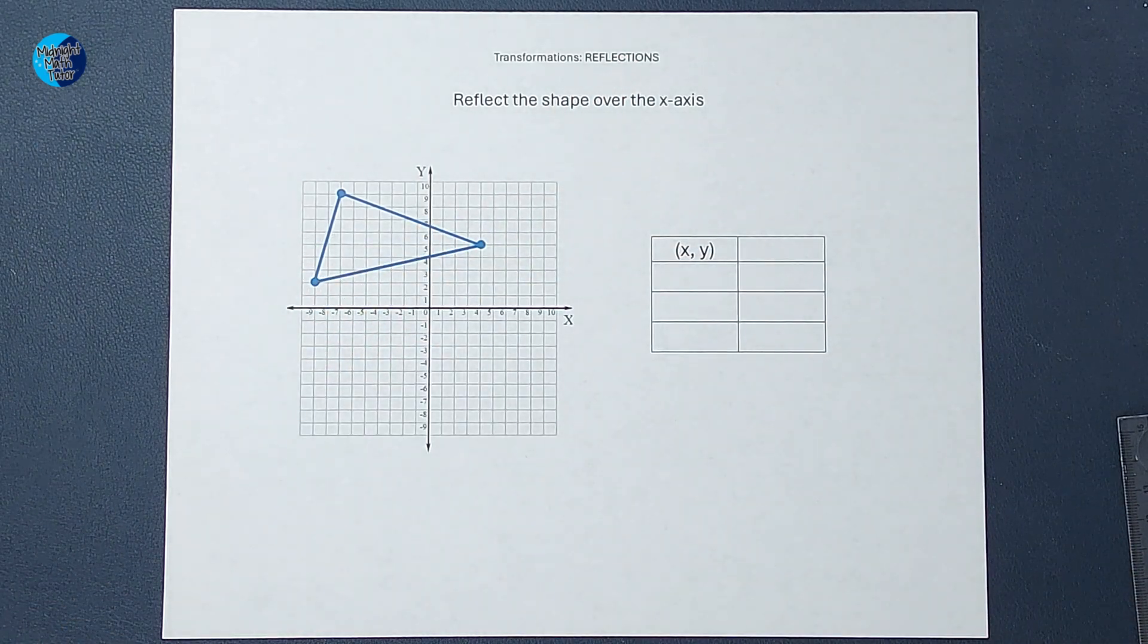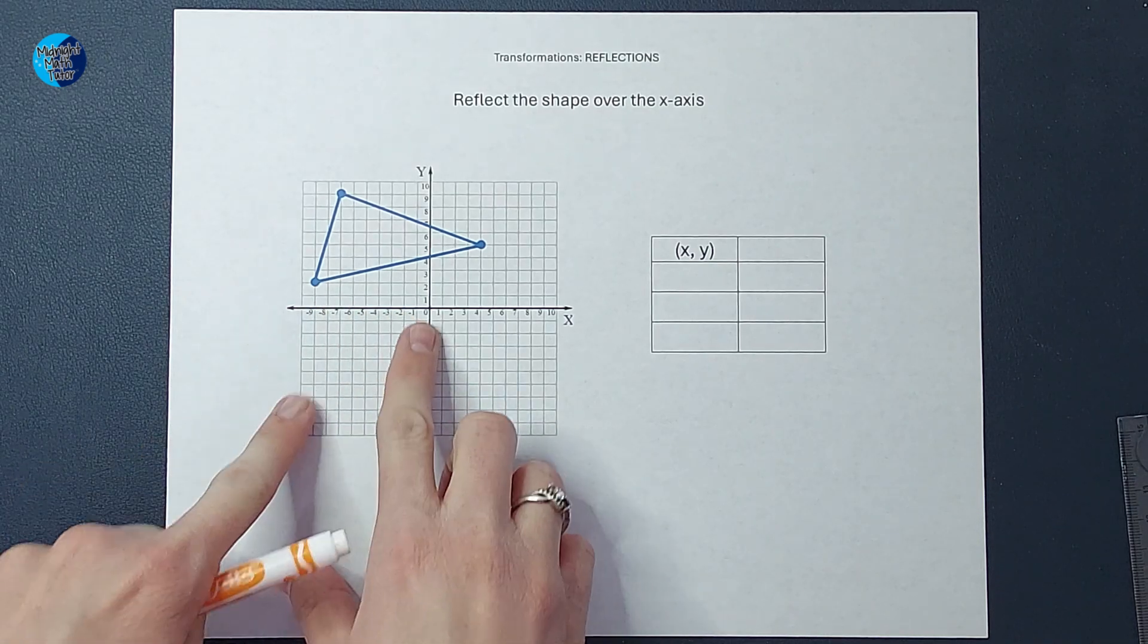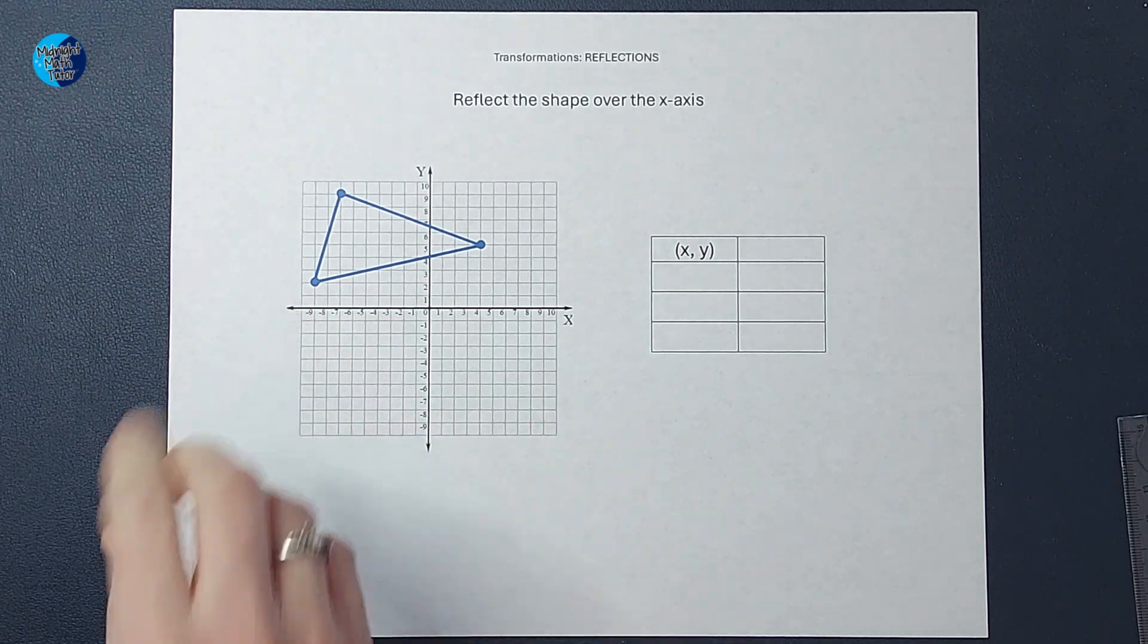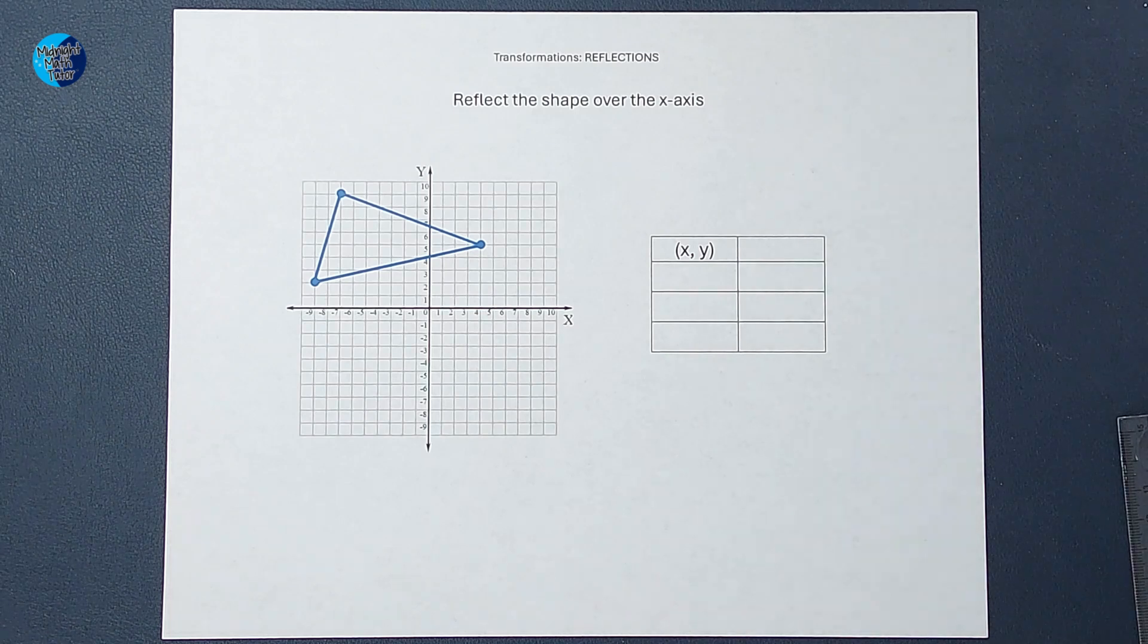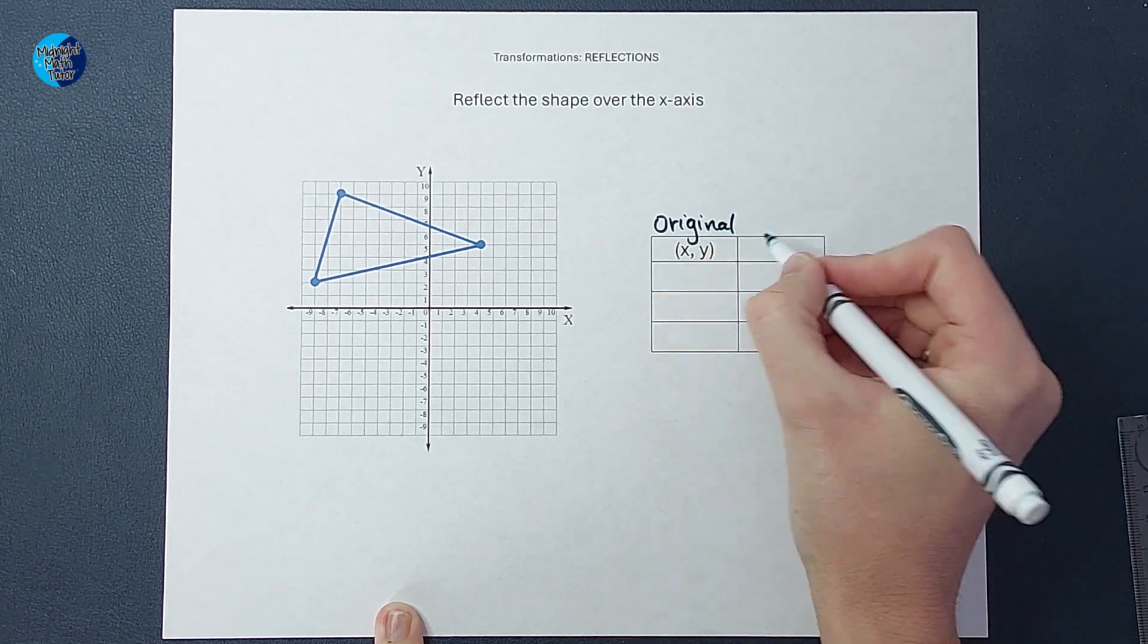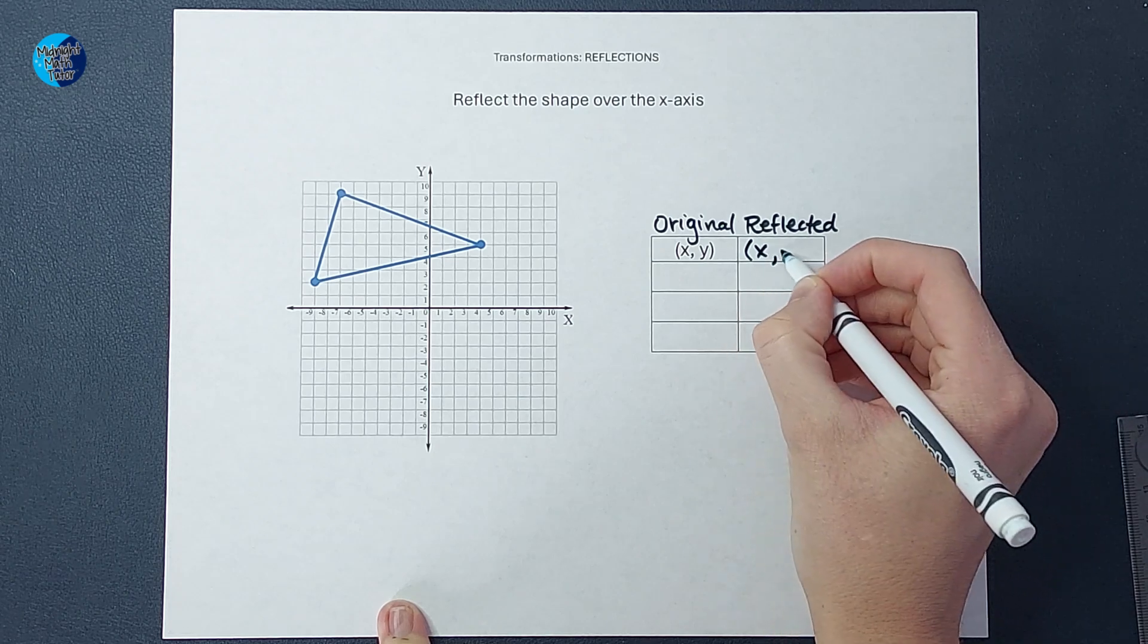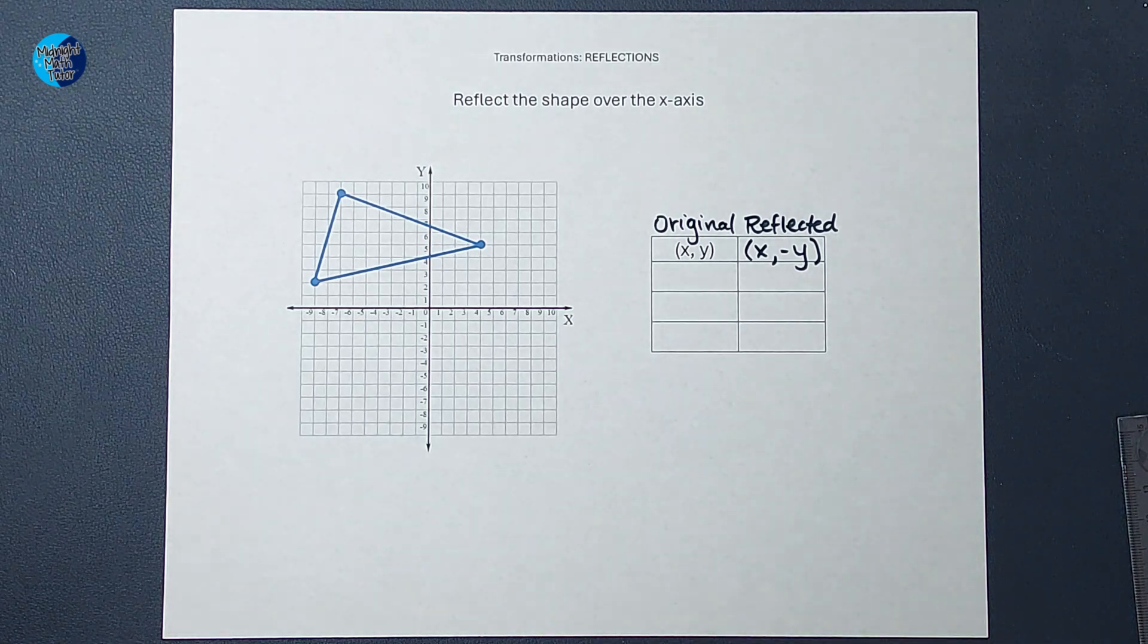Well, yeah. So basically what I'm going to do when I'm reflecting over the x-axis, my original point, the x is going to stay the same. I'm still going to go over negative nine. It's the y point that's going to change. The number is going to stay the same. I'm just going to go down instead of up. So an easy way to think of this is if (x, y) is my original point, my reflected point over the x-axis is going to be (x, -y). The x is going to stay the same. The y is going to change its sign.